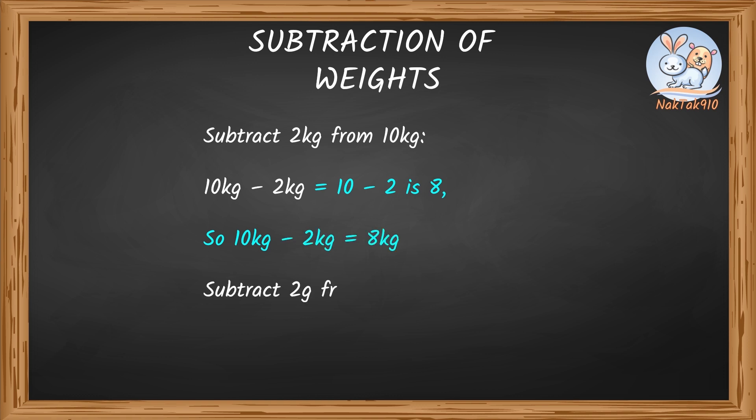Subtract 2 grams from 13 grams. 13g minus 2g equals 11 grams. Now let's subtract measurements with different units.